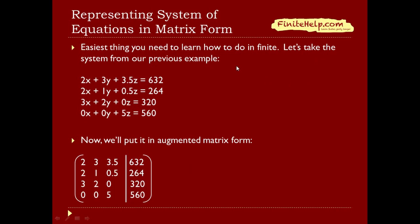Let's take that system from our previous example and put it in augmented matrix form. All that means is you have an x column, a y column, a z column, and a constant column. You just put the number 2 here, 3 here, 3.5 here, and 632 here.